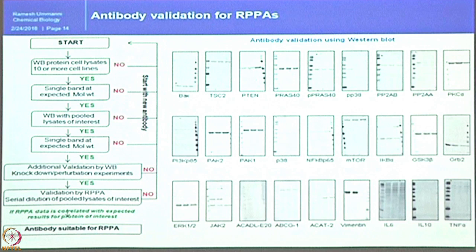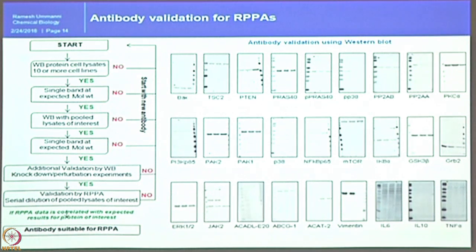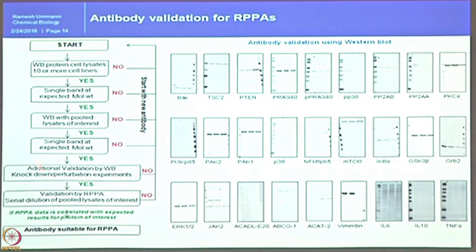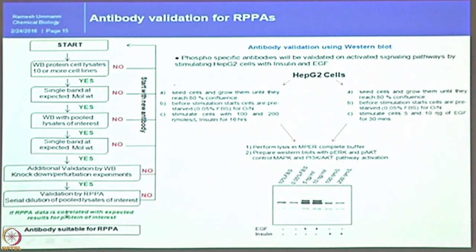From personal experience — and not as a brand ambassador — there was a good experience with Cell Signaling antibodies and a very bad experience with Santa Cruz. If an antibody shows a single band and passes, it proceeds through the pipeline. Antibodies that fail at the first step are immediately discarded and a different antibody is purchased.